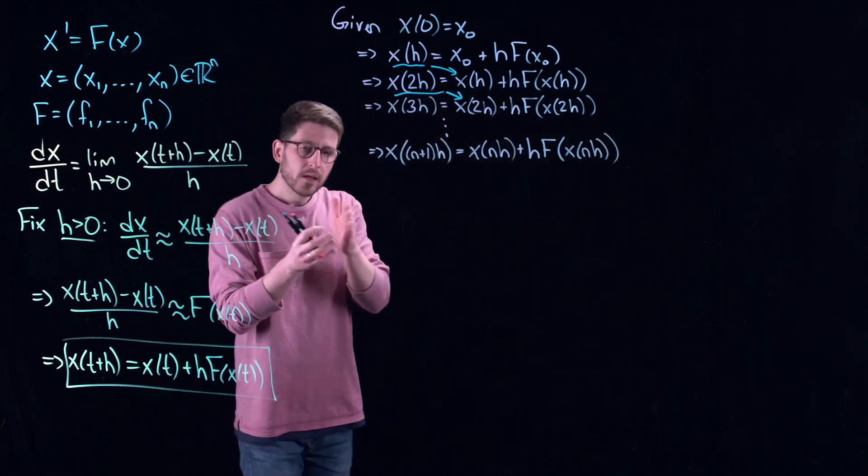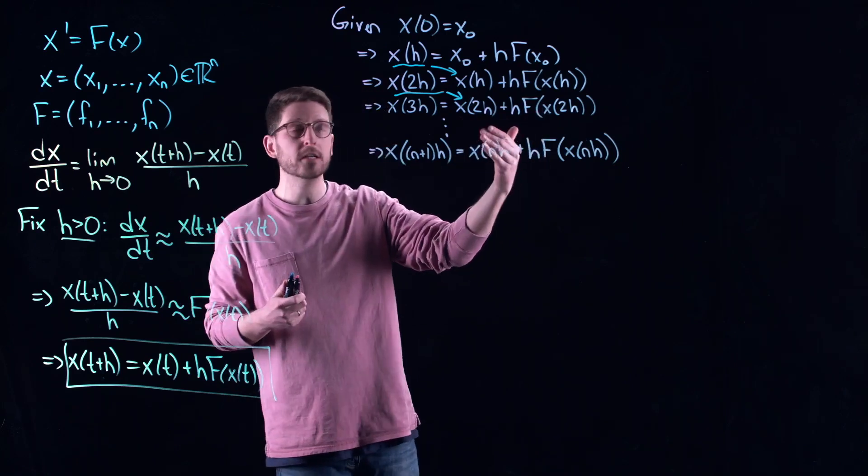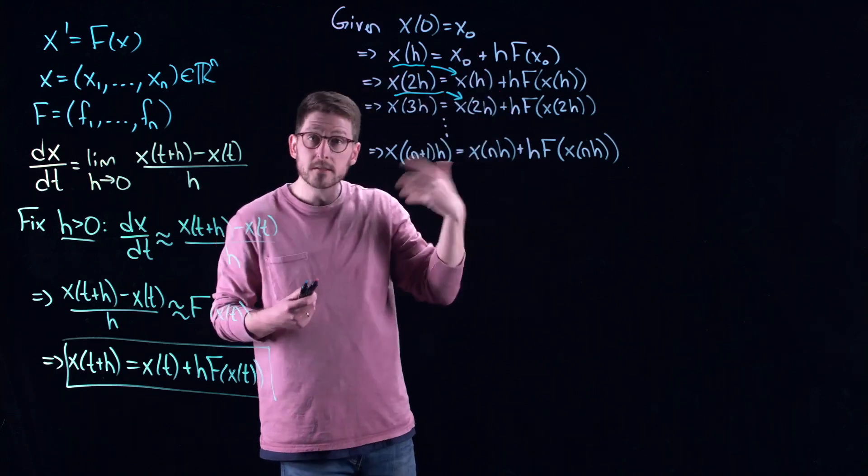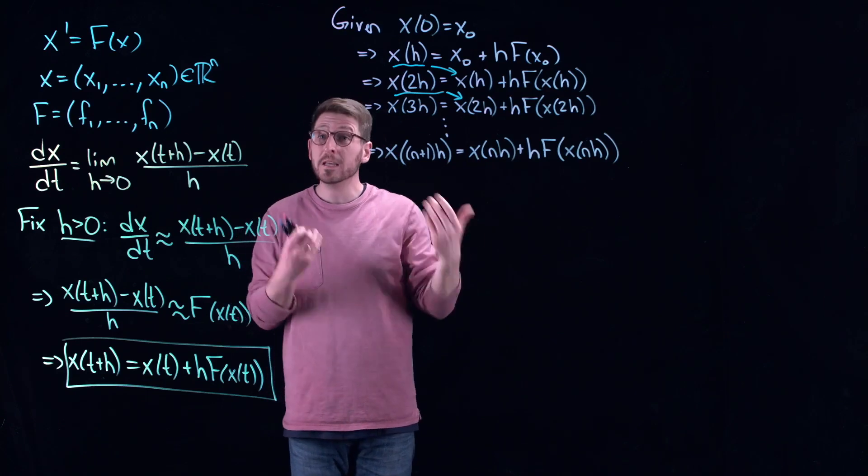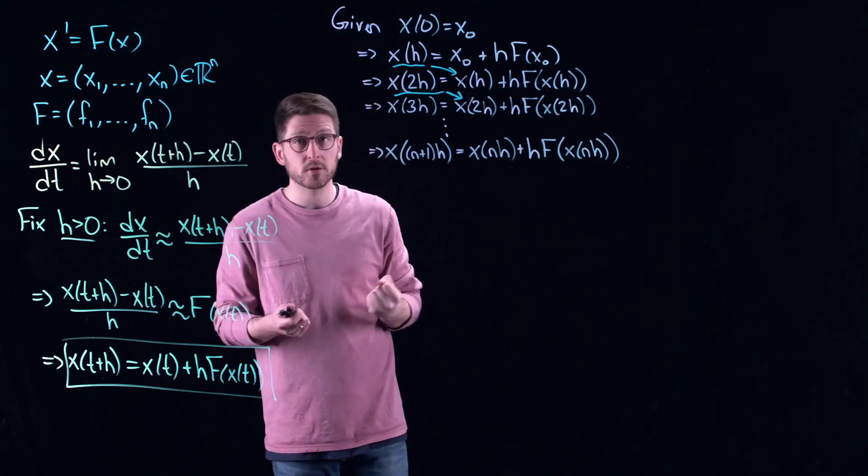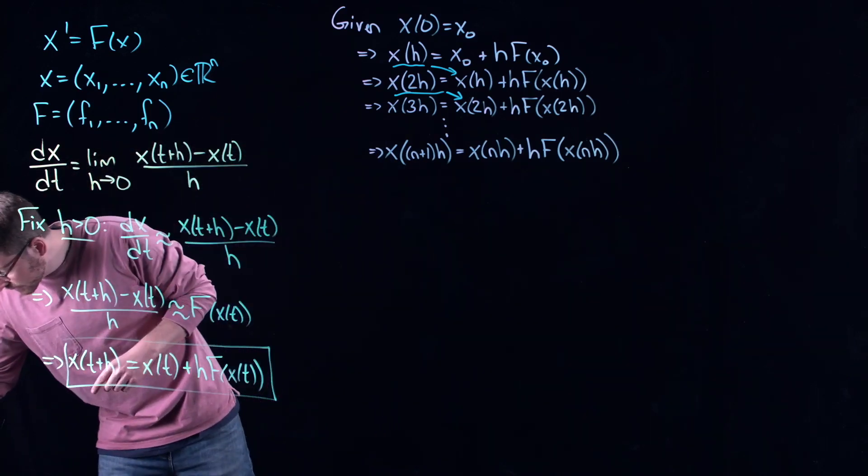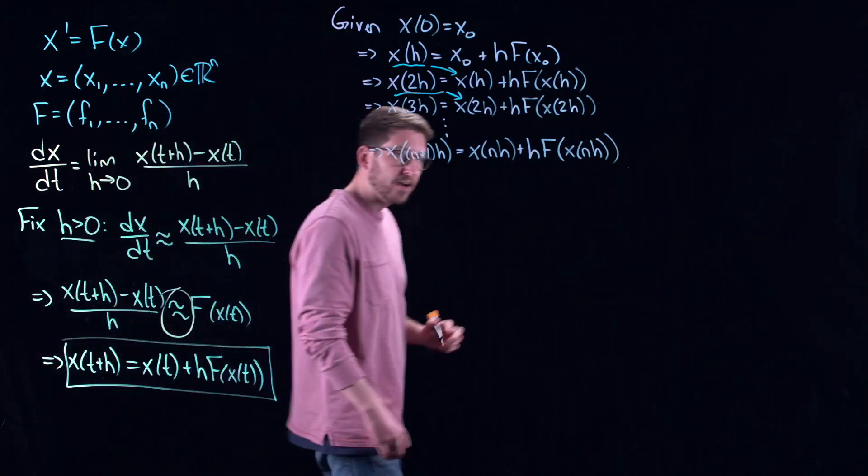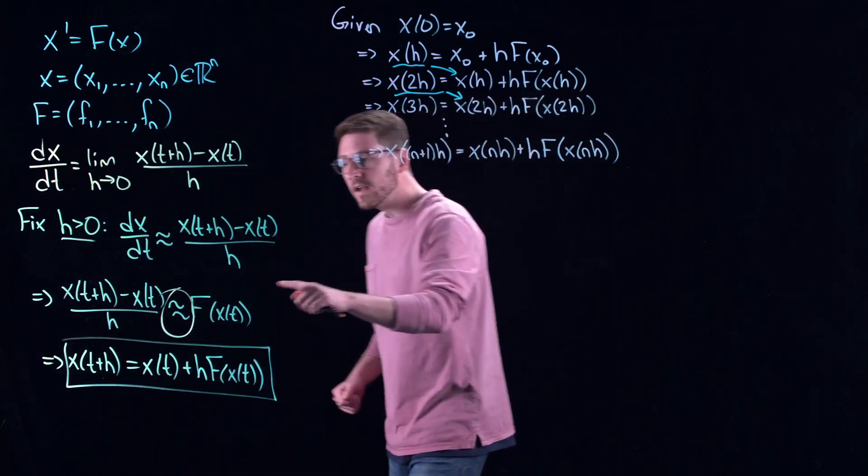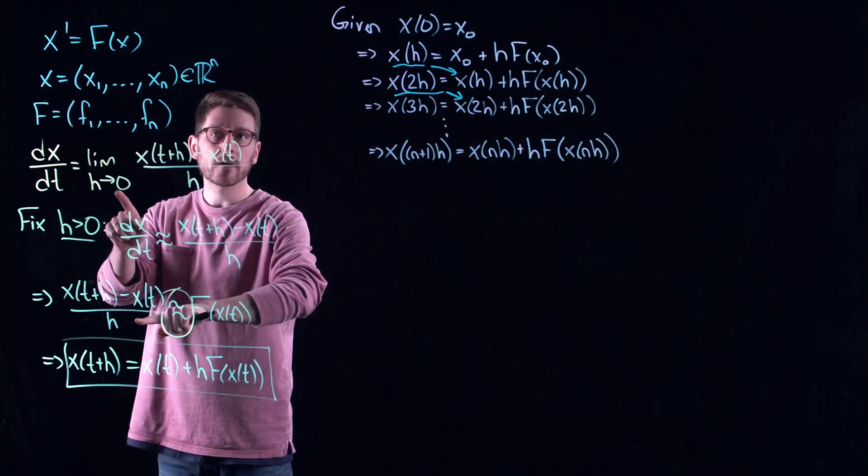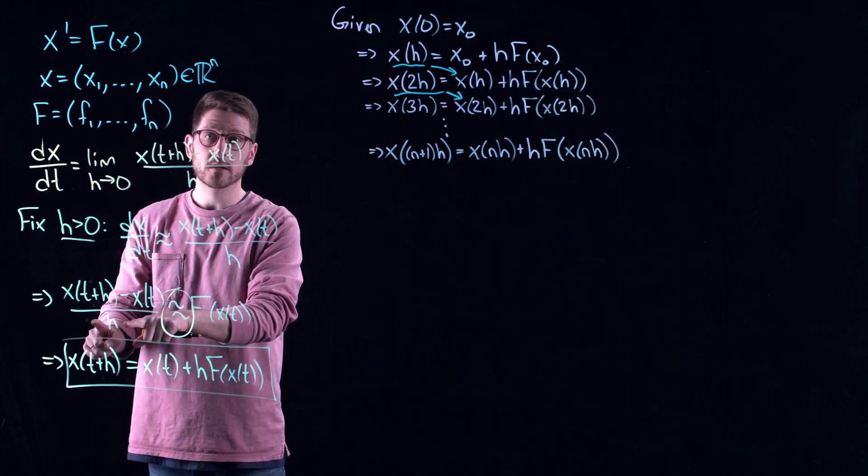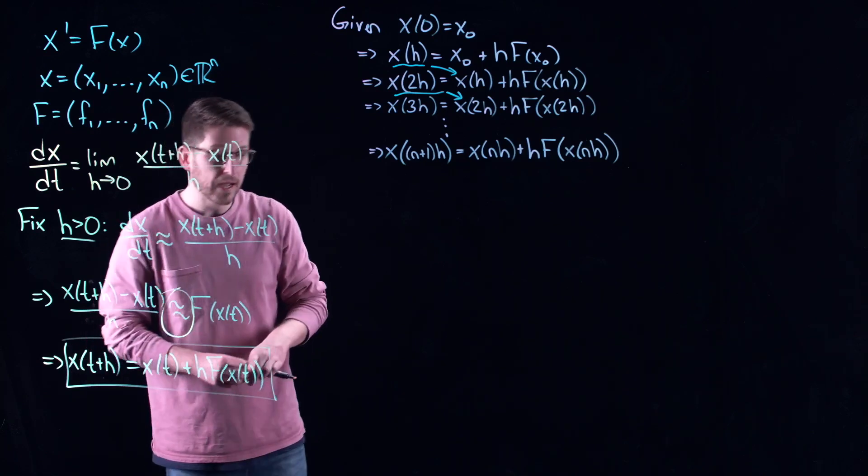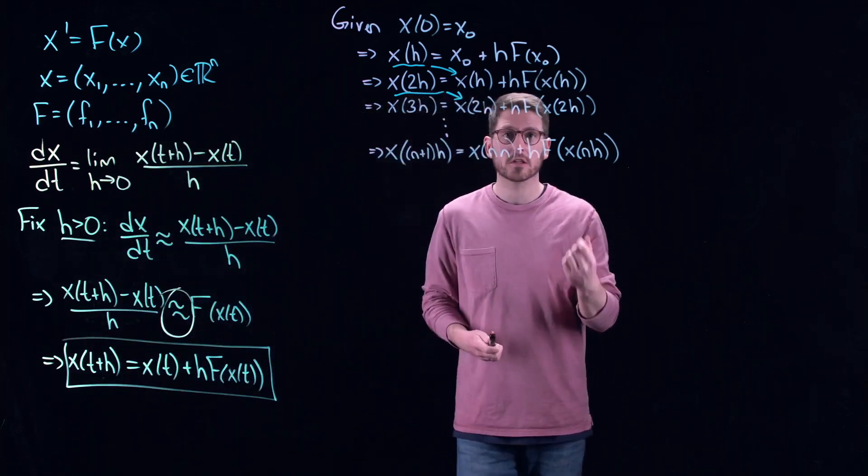That means that I could keep going. I could go three h's into the future, and this would be whatever I was doing at two h into this right-hand side. You can see, every single time I use what I was given, it approximates where I'm going. Then I know where I'm going, I use it to approximate further. So that if I want to go n plus 1 times h units into the future, this is just knowing what I did n units in the future, and then putting it into this equation.